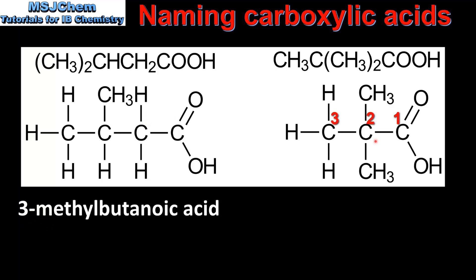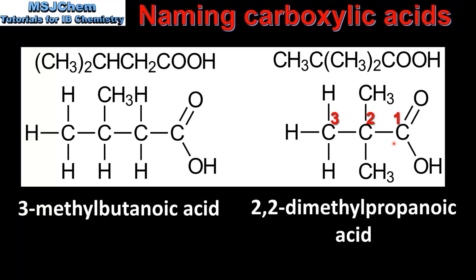In the example on the right we have two methyl groups which are both bonded to carbon number two. There are three carbon atoms in the longest chain, therefore it is named 2,2-dimethylpropanoic acid. In the next video on naming organic compounds we look at naming the aldehydes.